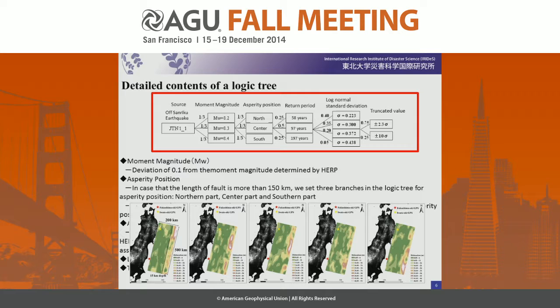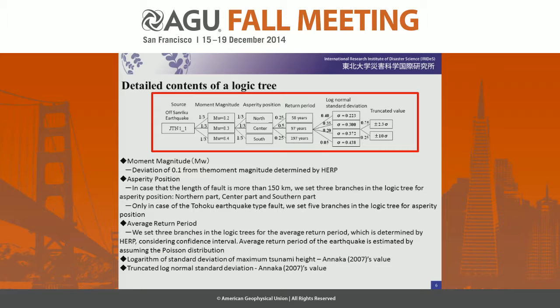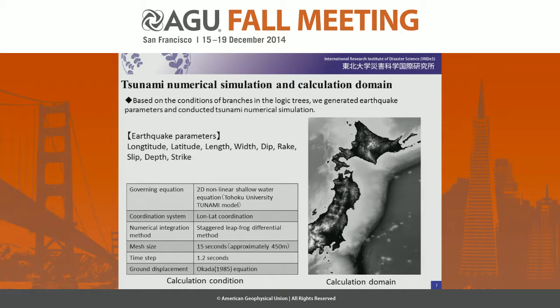In the case of the Tōhoku earthquake-type fault, we set five branches in the logic tree showing different slip distributions selected from many slip distribution patterns generated by an engineering model. For the return period, we set three branches in the logic tree considering the confidence interval; the return period is estimated by assuming the Poisson distribution. For the log-normal standard deviation of maximum tsunami height and its truncated value, we adopted the ANNAKA 2007 values. Based on the branch conditions in the logic trees, we generated earthquake fault parameters: longitude, latitude, length, width, dip, rake, slip, depth, and strike.